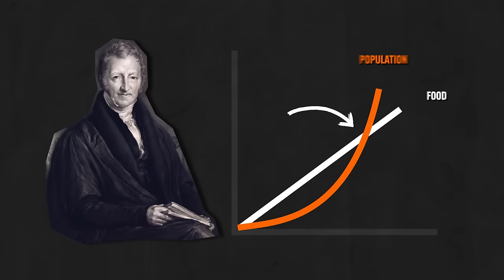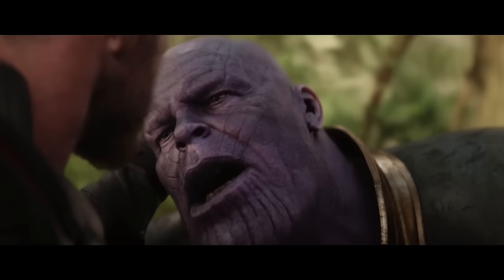Malthus worried that if the population kept expanding rapidly, by 1800 there would be more people than food to feed them, resulting in massive famines and plagues as the only way to decrease the population. He argued that people should delay marriage and have fewer children. However, Malthus was wrong. New technologies like mechanized farming and chemical fertilizers enabled the food supply's growth to keep pace with the population — something Malthus could not have foreseen.